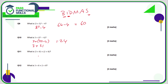Question 11: we have brackets, so we do those first — 3 plus 8 is 11, and 2 plus 8 is 10. The question is 11 times 10, which is 110. Question 12: we do the multiplication before any addition — 8 times 2 is 16. The question is 3 plus 16 plus 8: 8 plus 3 is 11, and 11 plus 16 is 27.